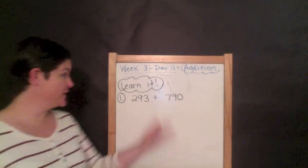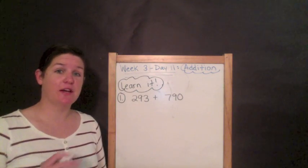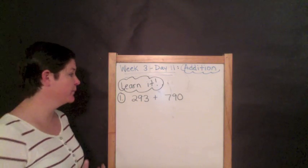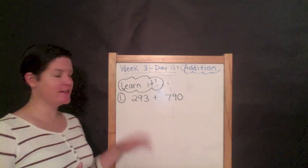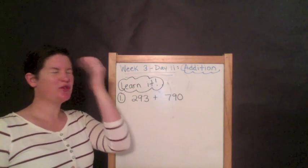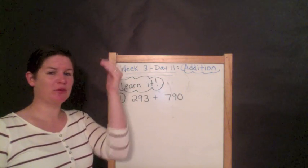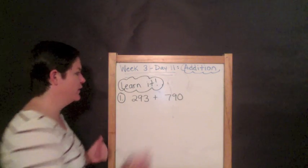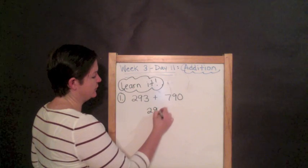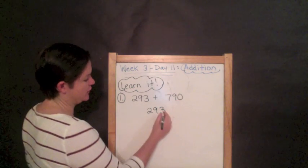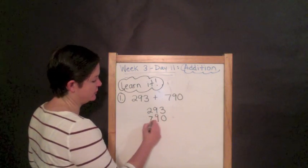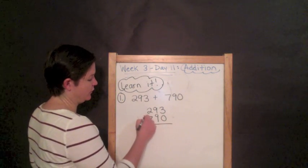So our first one says our directions are to find the sum. That means we need to add these two numbers to get the total, which would be our sum. So I've written it horizontally, and some kids like to go ahead and just try to add it horizontally in their heads, but when you do so much work in your head, you're going to make mistakes. So you need to write this out. First things first, like we said in our boss notes, line it up in the correct place value. So the zero is in the ones place, the nine is in the tens place, and the seven is in the hundreds place.